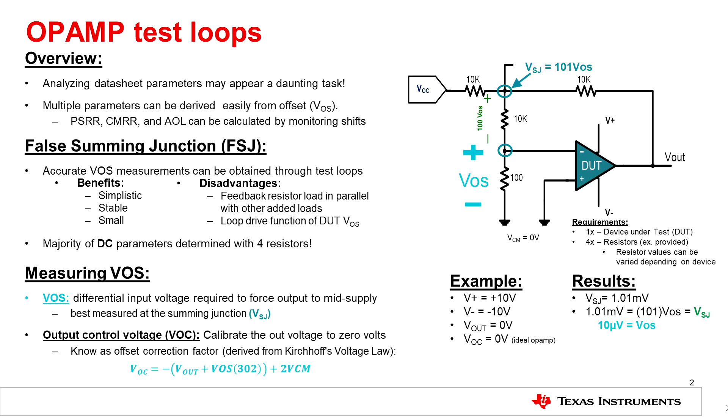The schematic of the false summing junction is provided in the upper right-hand portion of the screen. The false summing junction has various benefits, such as its simplicity and its small form factor. This is mainly due to the reason that there's only four resistors required to measure the majority of DC parameters for an amplifier.